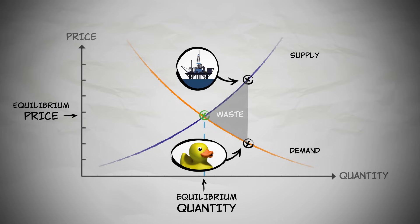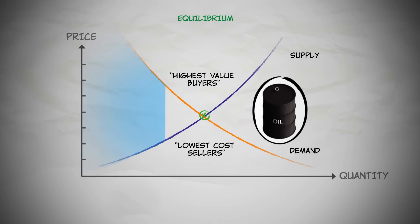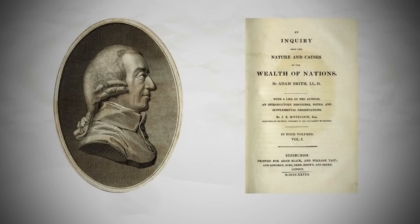In a free market, buyers and sellers acting in their own self-interest end up at a price and quantity that allocates oil to the highest value buyers produced by the lowest cost sellers in a way that maximizes the gains from trade. The sum of the benefits to buyers and sellers. This is one of the reasons Adam Smith said that the market process works like an invisible hand to promote the social good.